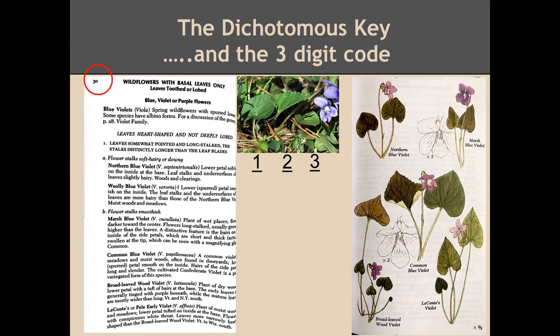When you turn to page 30, you'll see at the top a general description of the flower, followed by a more detailed description of the group. There is a sub-key to help you further identify the species of violet — a choice between flower stalks being soft, hairy, or downy, or flower stalks smoothish. In our case the stalk is smoothish, and most likely this is the common blue-violet, which can be found on the opposite page.